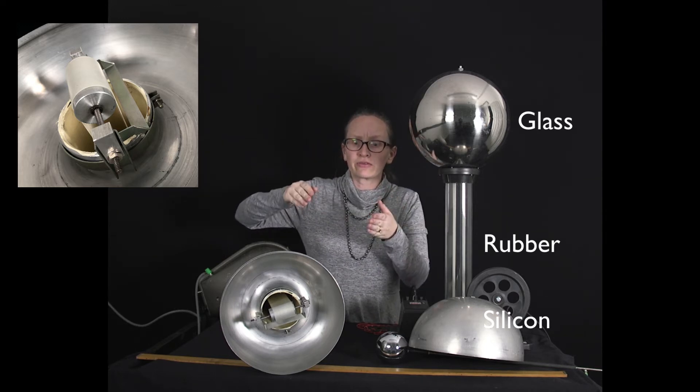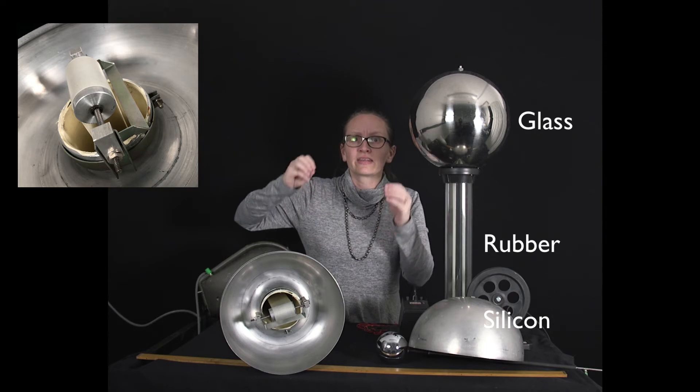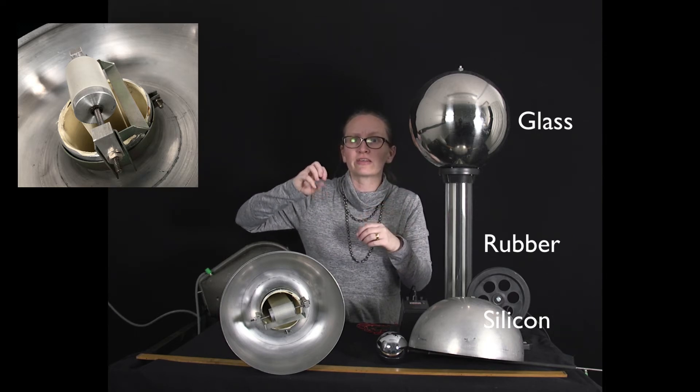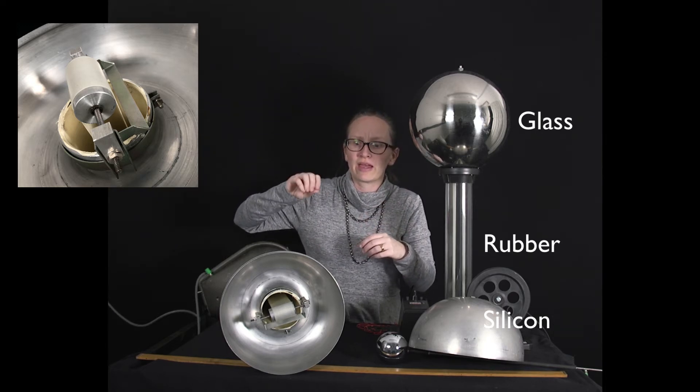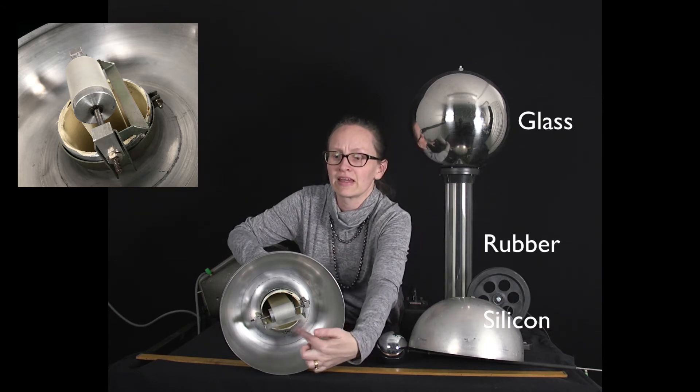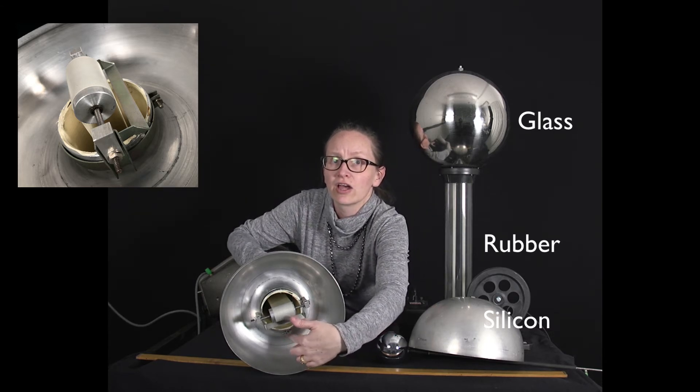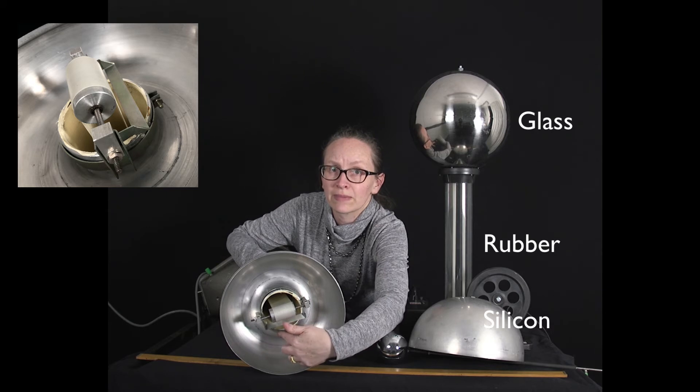Because metal is a conductor, the electrons in the metal are going to be attracted to that positive roller, and so we're going to end up with a lot of negative charge along this metal strip here.